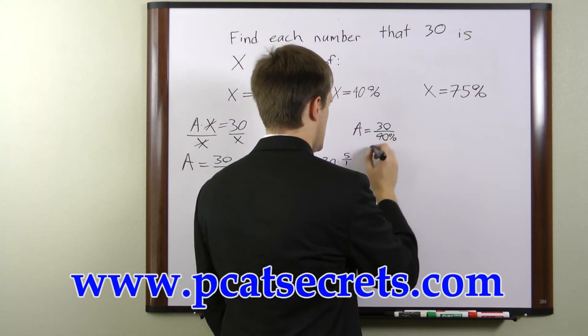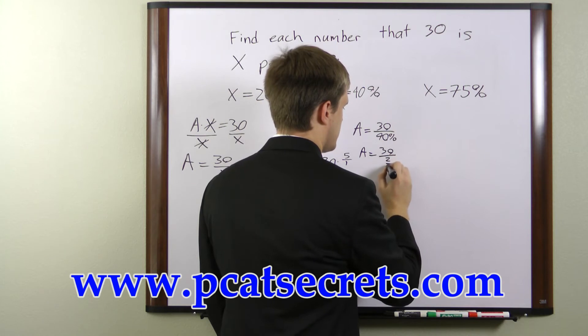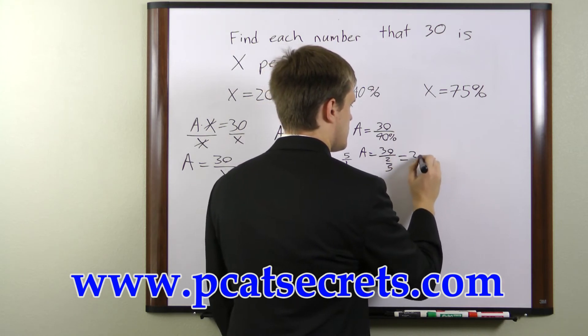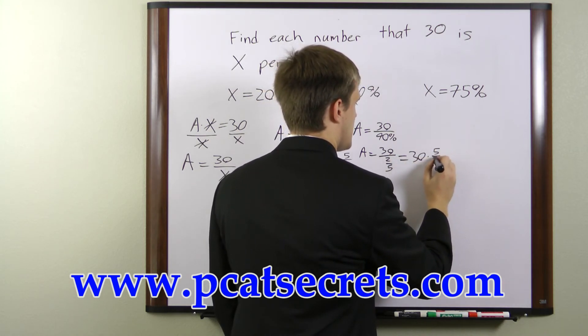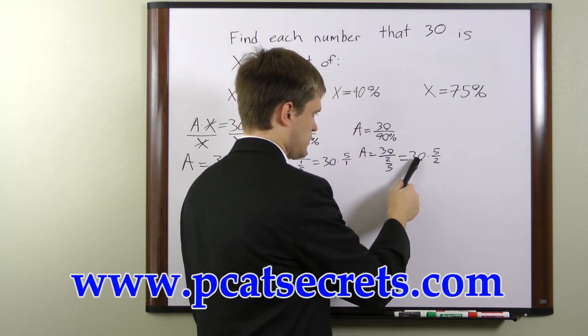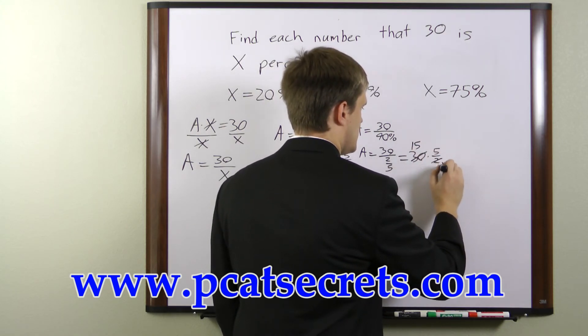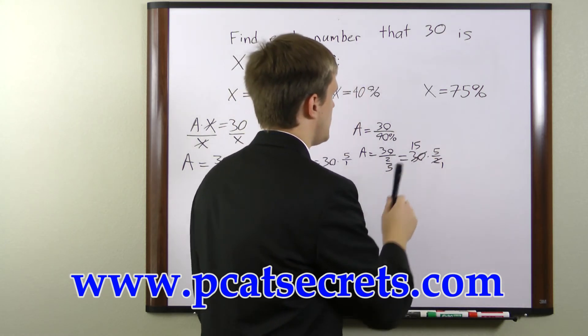So a is equal to 30 over 2 fifths or 30 times 5 over 2. Now we can cancel here dividing 30 and 2 by 2. So we get 5 and 1, 15 and 1.